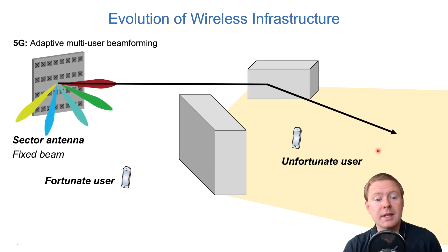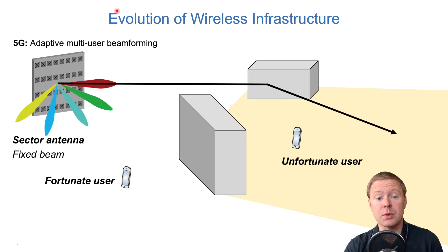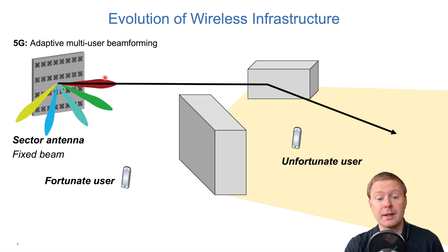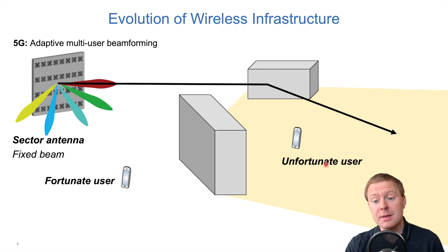In 5G, we added functionalities at the base stations such as massive MIMO, or multi-user beamforming. We removed conventional sector antennas and replaced them with antenna arrays that can send signals in different directions — many directions at the same time, at different or the same frequency. We can then have one beam going towards a fortunate user and also form a signal focused towards a building, so more signal power makes it around the corner to a difficult user.